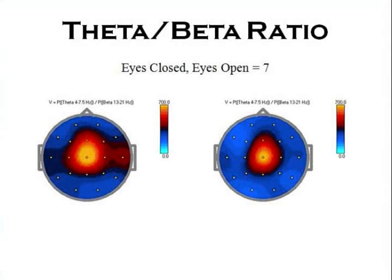The ratio of slow to fast waves, shown on the scale on your right, reads 700. The normal ratio should be less than 3. So this person who had a mild brain injury has slowing in the front part of the brain, as seen on this QEG, and there's treatment for it that doesn't involve medication — some type of biofeedback that I'll show you later.